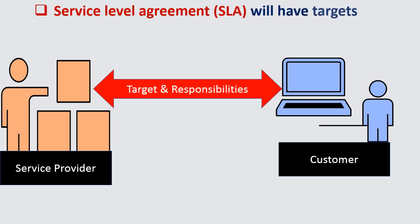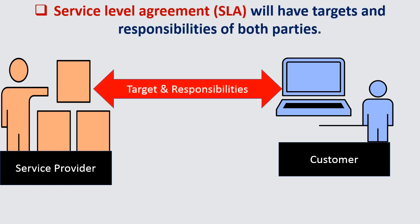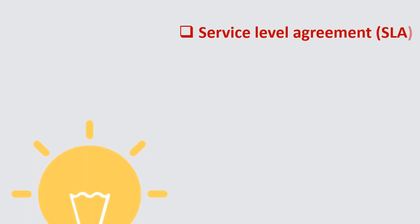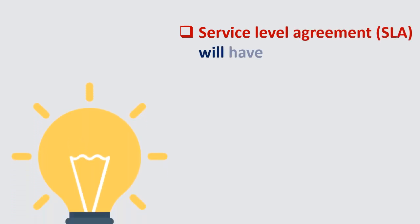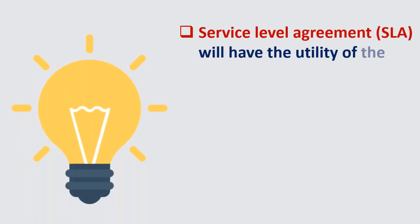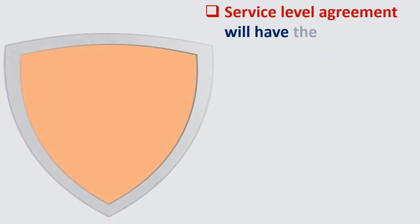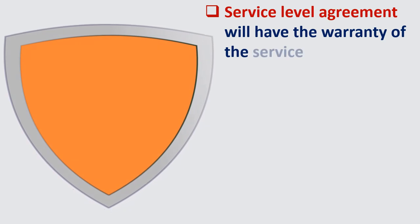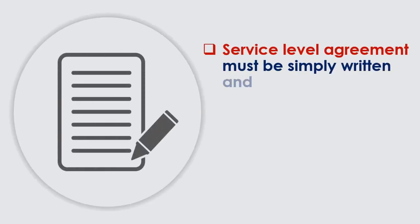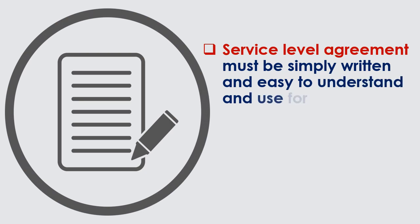An SLA will have targets and responsibilities of both parties, the utility of the service, and the warranty of the service. The service level agreement must be simply written and easy to understand and use for all parties.